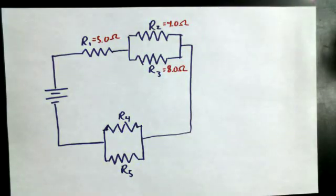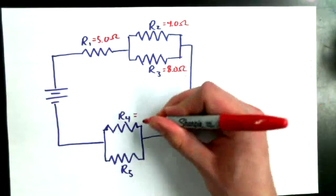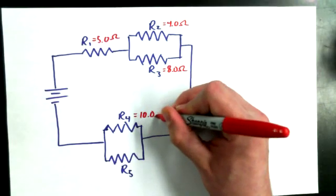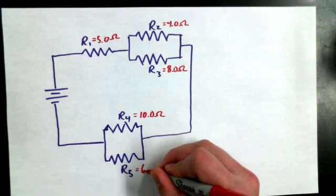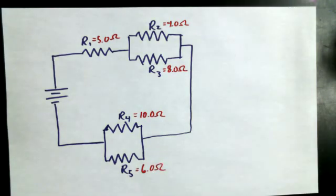And this is more for the benefit of people that are watching that missed the lesson. R4 is 10.0 ohms and R5 is 6.0 ohms, and the challenge was to find the resistance of the circuit.